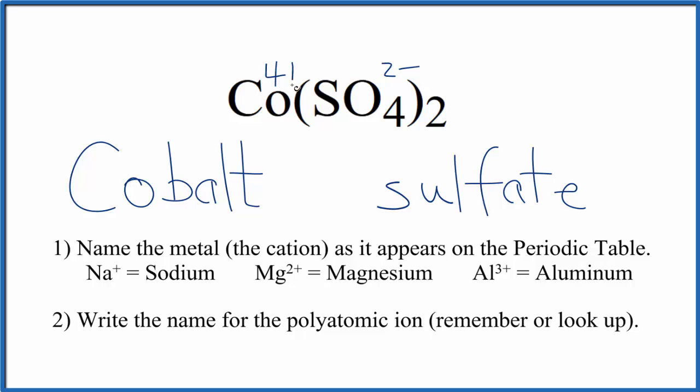The cobalt has to be 4 plus to give us a net charge of 0. So we have the cobalt 4 plus. We write a Roman numeral 4 between these names here. Put parentheses around it.